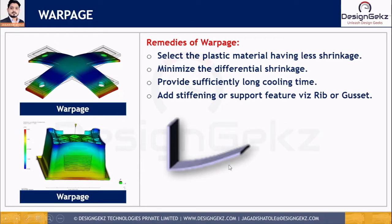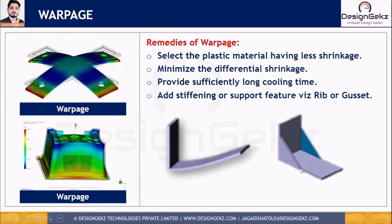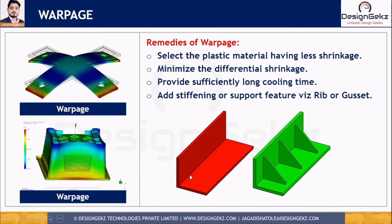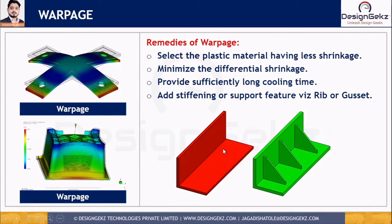If you design the part in a flat manner, it will definitely get warped. To avoid that warpage, we can add a stiffening profile like a gusset so that it will not warp. As a design engineer, we can modify the geometry by adding stiffening profiles or support features. On this part also, we can add stiffeners called gussets to give maximum strength to the part.